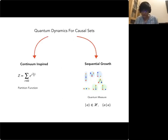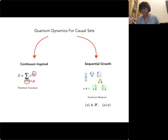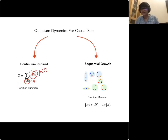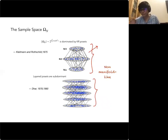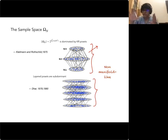If you look at the partition function with just a uniform measure and ask what the space of causal sets looks like, it's analogous to quantum mechanics where, in the path integral, most paths are continuous but not differentiable. The analogy here is that most causal sets are highly non-manifold-like. The action is needed to suppress those configurations and select the manifold-like ones we're interested in.